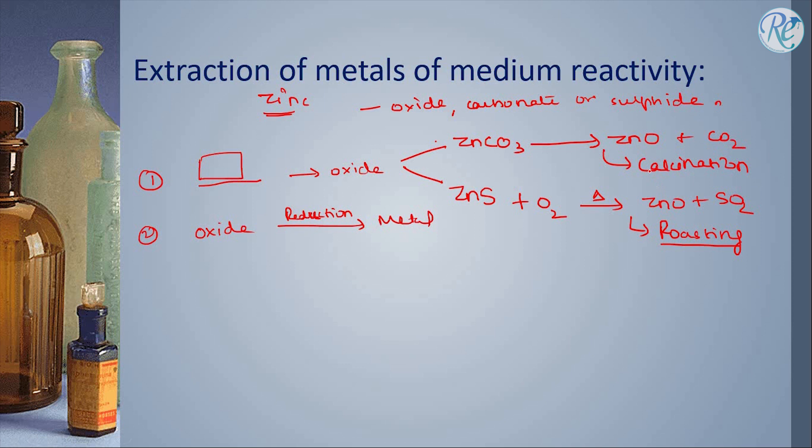So in the first process, either calcination or roasting is done depending on whether it is carbonate or sulphide. You see the difference? Here we are not using any oxygen, but roasting takes place in the presence of oxygen.